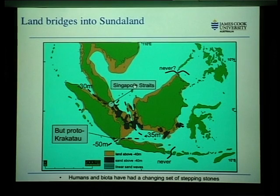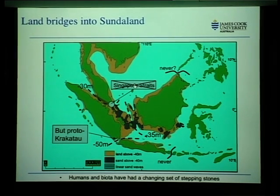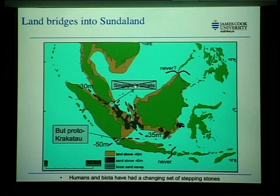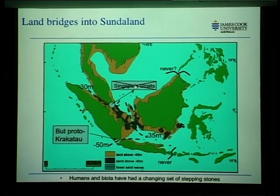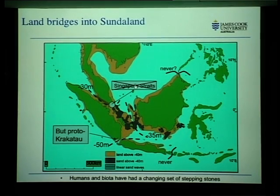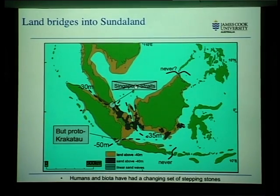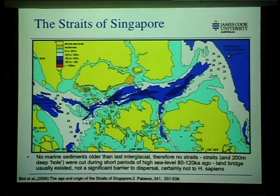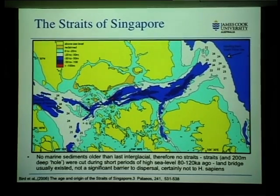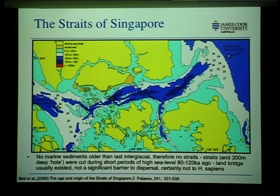Except you don't really — the Straits of Singapore are a recent invention. They were not here during the last interglacial. They've only been here for the last 10,000 years, and prior to that, for maybe 10,000 years around about 100,000 years ago, and maybe a few thousand years around 80,000 years ago. The reason I say that is, if you look at the bathymetry of the Straits and the geology of Singapore, there are no marine sediments older than the last interglacial anywhere.